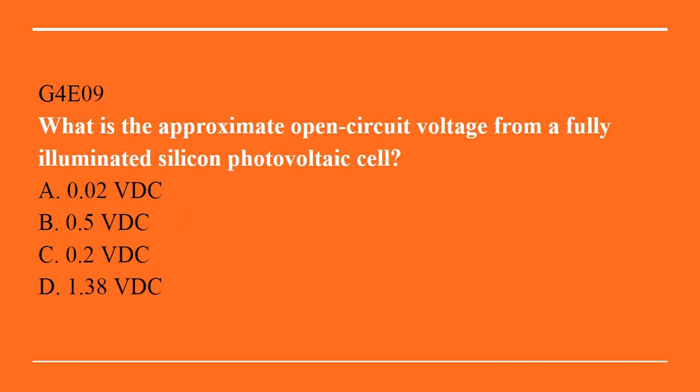G4E09: What is the approximate open circuit voltage from a fully illuminated silicon photovoltaic cell? A. 0.02 VDC. B. 0.5 VDC. C. 0.2 VDC. Or D. 1.38 VDC. Answer is B. 0.5 VDC.